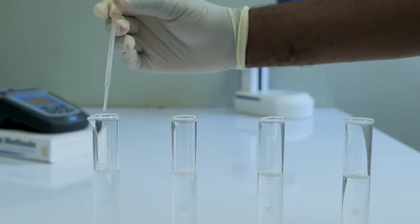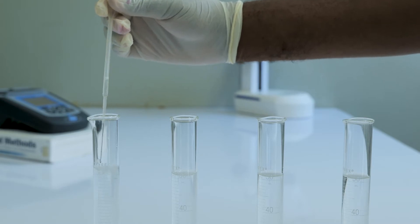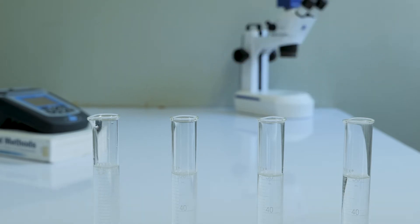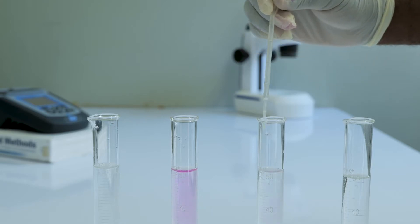The nitrite produced thus is determined by diazotizing with sulfanilamide and coupling with 1-naphthylethylenediamine dihydrochloride to form a highly colored azo dye that is measured colorimetrically.